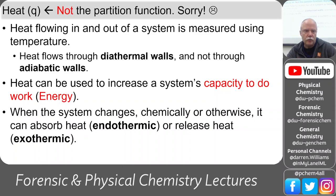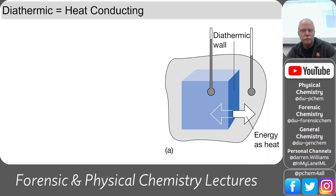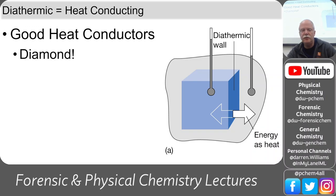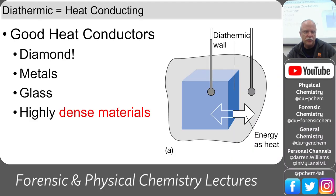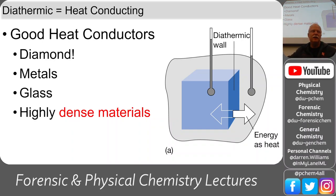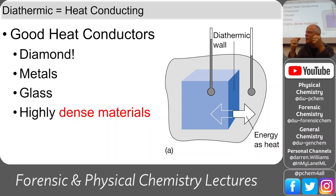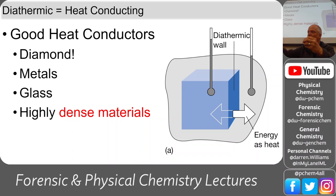Diathermic means heat conducting. Good heat conductors are diamond or diamond material — probably the best — followed by metals, glass, and any dense material. Think about the diamond structure: it's pure carbon in an infinite lattice of tetrahedral carbons bonded to other tetrahedral carbons at 109.5 degree angles. It's locked in all directions — super strong lattice. That's why diamond is so hard, and also why heat transfers very quickly through the carbon atoms from a hot side to the other side.